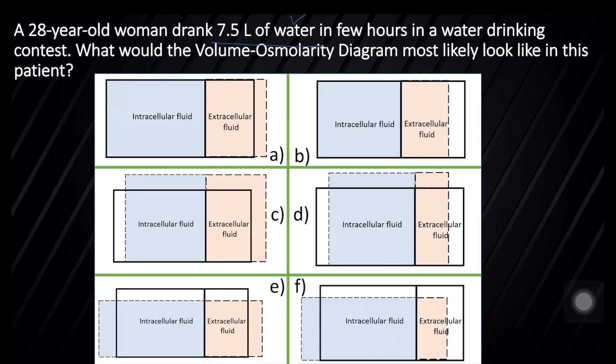What would be the volume-osmolarity diagram in this case? The water without solute is being added to the extracellular fluid. That would cause expansion of ECF and there would be hyposmolar volume expansion. This will also cause water to move from ECF into the intracellular fluid, and this would cause the cells to swell and rupture, ultimately resulting in death. The option is E.